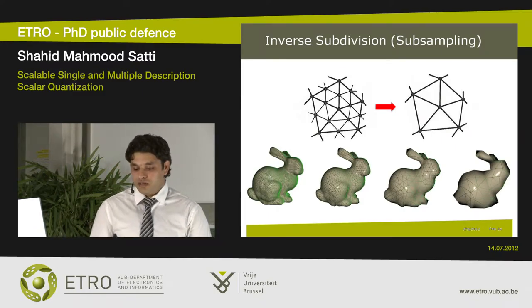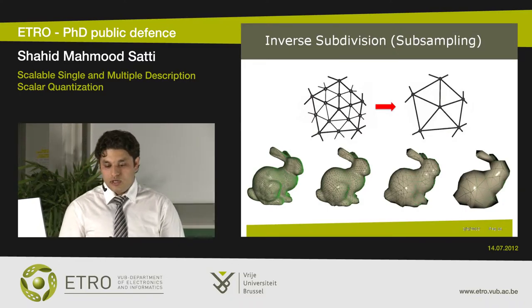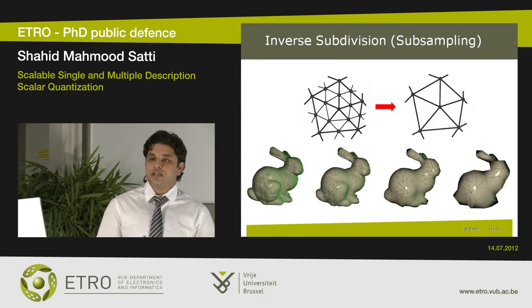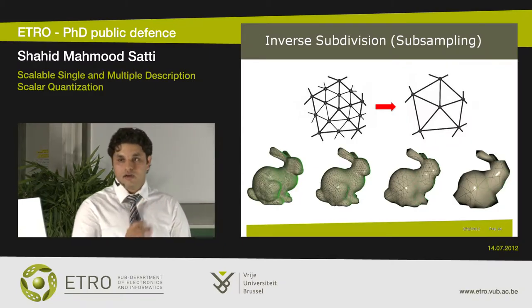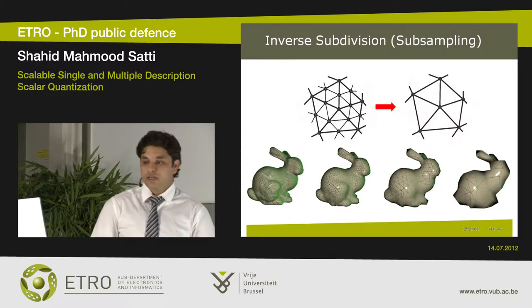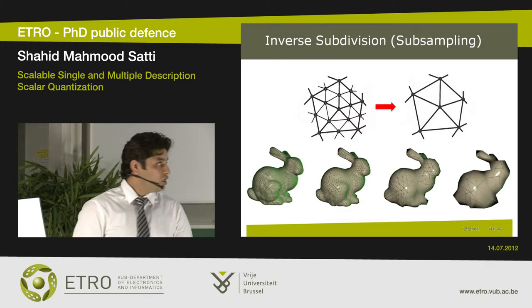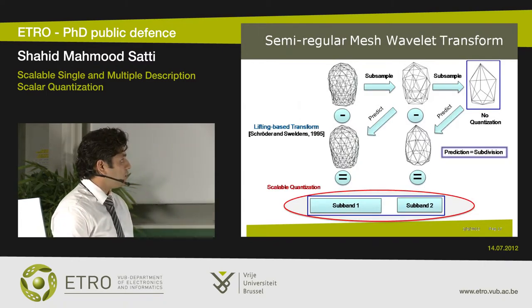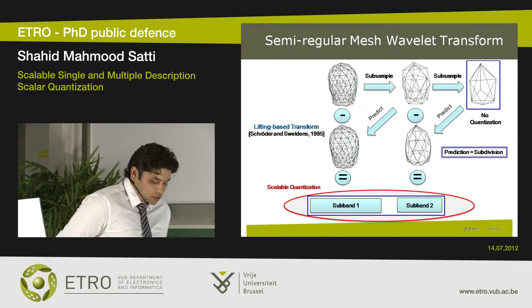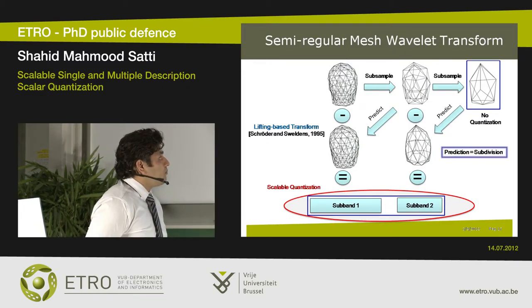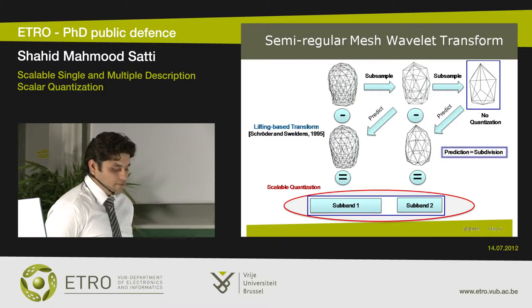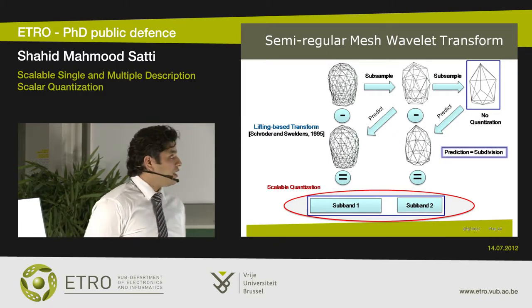In practice, semi-regular meshes are not acquired directly — original meshes are irregular. However, you can convert an irregular mesh to a semi-regular mesh using some kind of remeshing technique. We will be discussing highly detailed semi-regular meshes, and in practice, for scalable compression of these meshes, we use a wavelet transform or multi-resolution analysis.